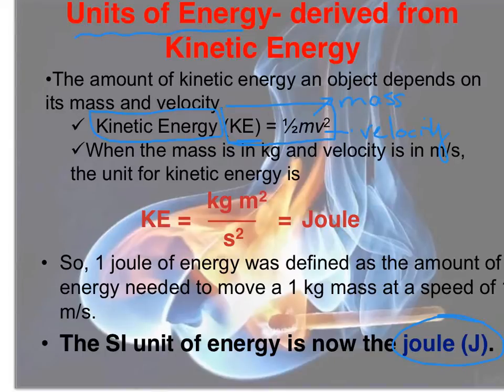When the units of energy first started to come around, they were based on calculations for kinetic energy. At that point, mass was used in kilograms and velocity was meters per second. Therefore, units for kinetic energy using the kinetic energy formula were kilograms meter squared per second squared.